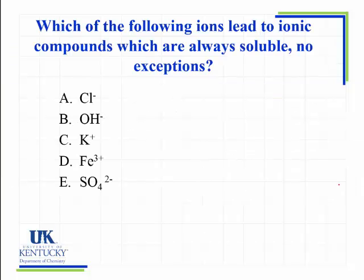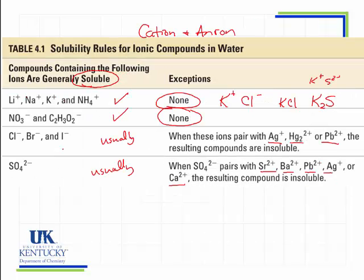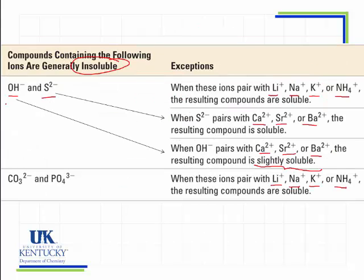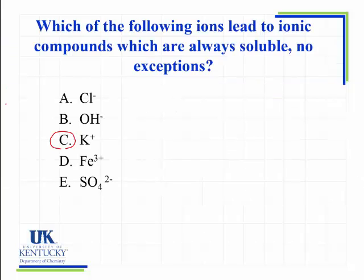Here's the first one. Which of the following ions lead to ionic compounds which are always soluble, no exceptions? If you look at the rules, hopefully you got the right answer there. Always soluble, no exceptions. The only one on the list is C. Always soluble, no exceptions. These guys are on that list. There is no rule for iron anywhere. There's no rule that says irons are these. But there's a rule for chlorides, but they have exceptions. There's rules for hydroxides, they're usually not soluble. There's rules for sulfate, but there are exceptions. So that is the only one without exception.